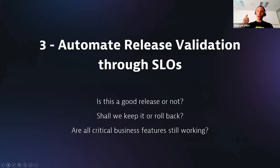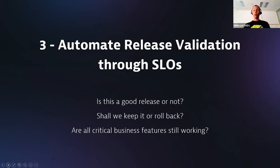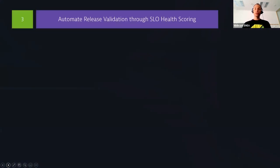After getting release visibility and defining business-critical SLOs with alerting — especially for production — the next step is automating release validation through SLOs. When you have a new release, you want to know: is this a good release or not? If it's already released, shall we keep it or roll it back because we're burning too fast through the error budget? Are all critical business features still working? This is very important, especially after deploying a new version.